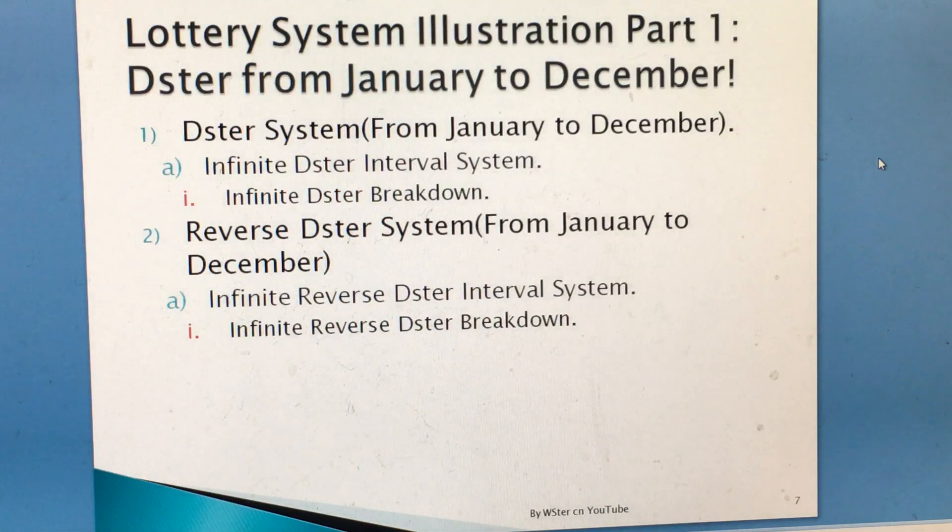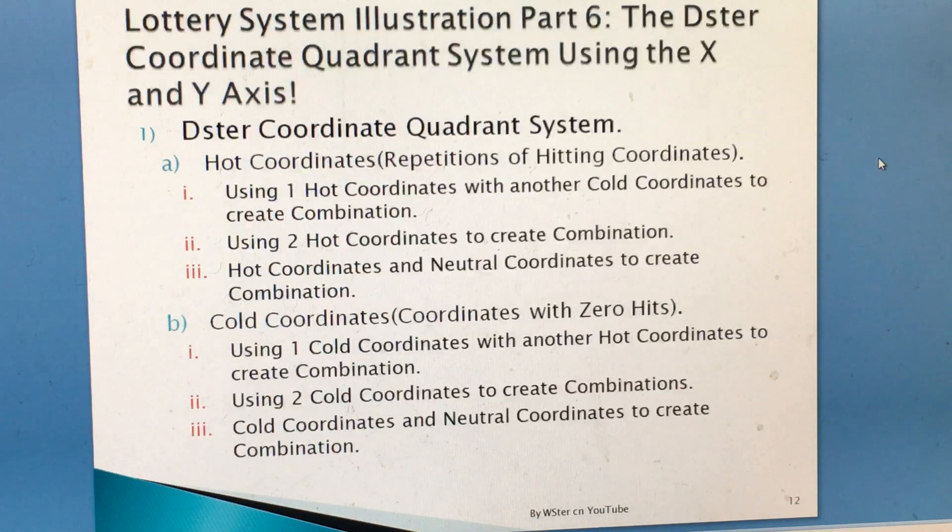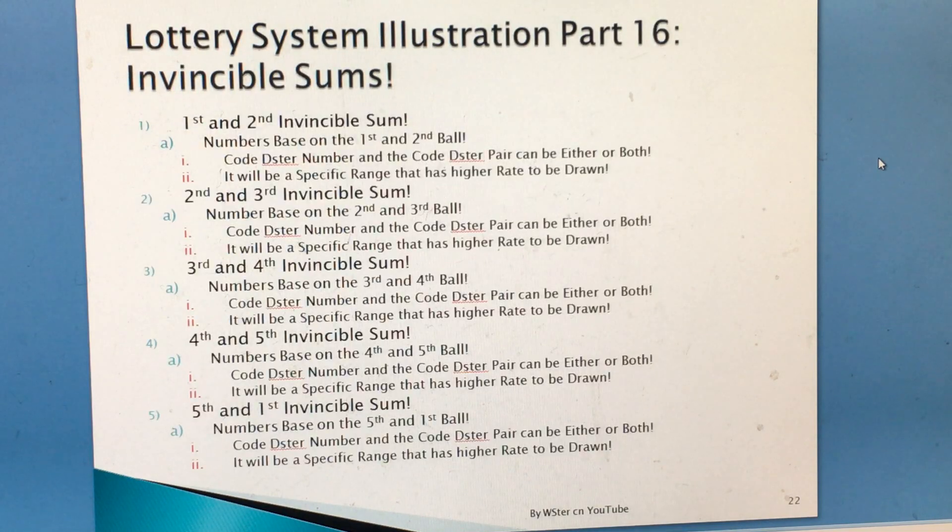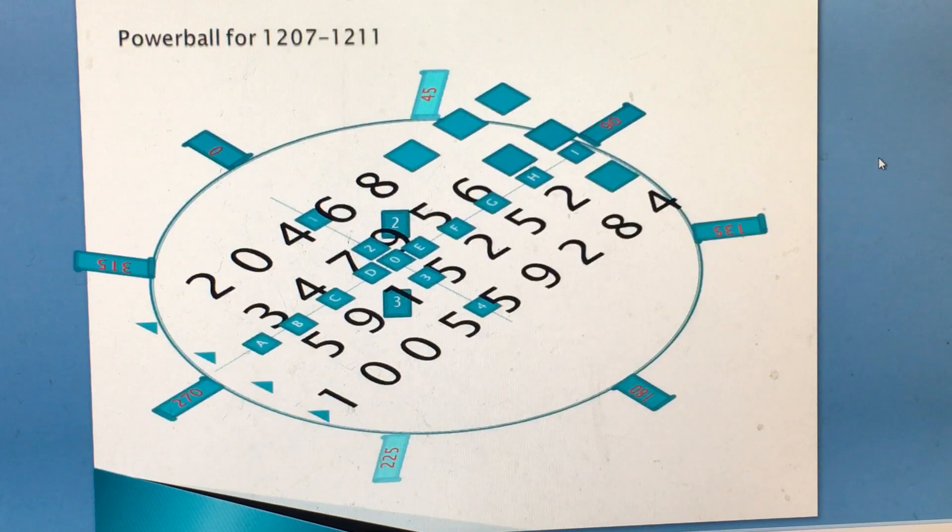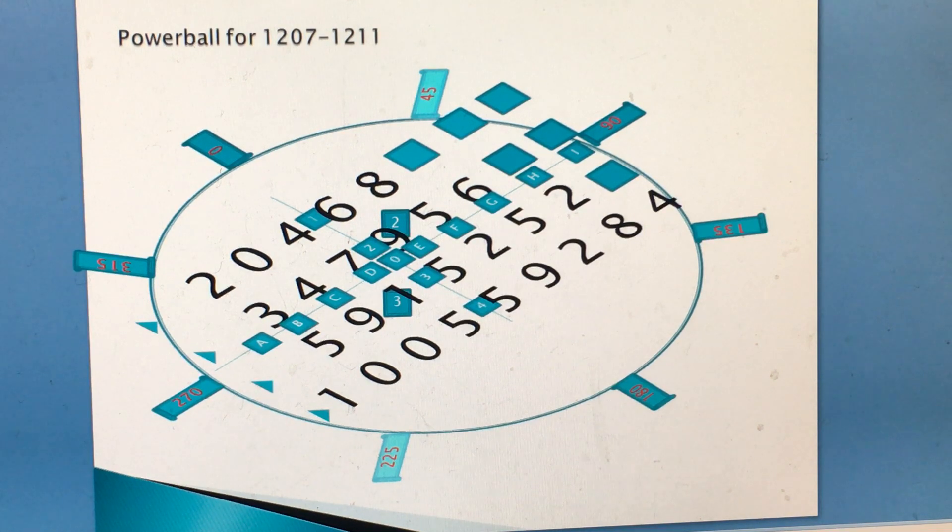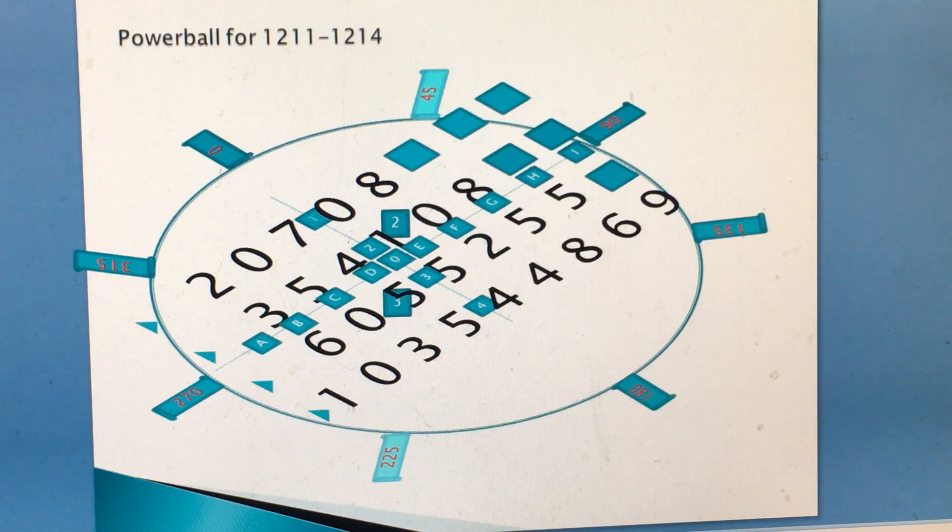And one of my systems, it goes to part 16, which is invisible numbers. And 17 is kind of working on that number. Now, for Powerball, for 12/7 to 12/11, we'll be using this grid.